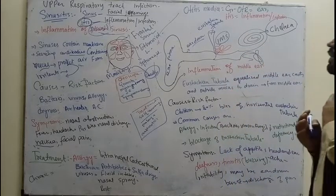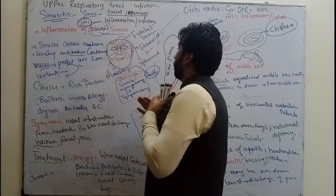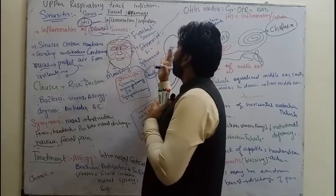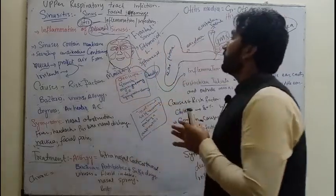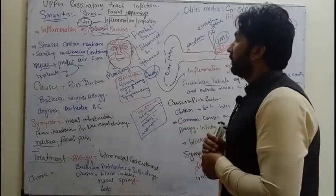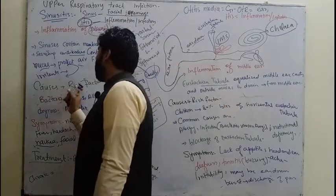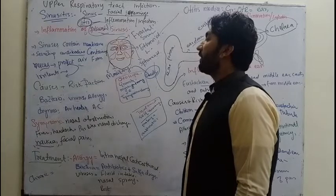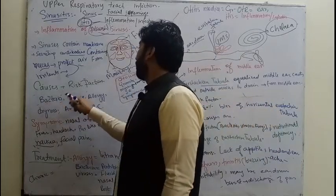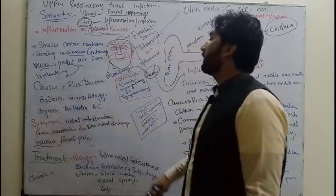So we have discussed four types of sinuses: frontal sinuses, ethmoid sinuses, sphenoid sinuses, and maxillary sinuses — maxillary being the largest facial opening. Now let's talk about the causes and risk factors. Sinusitis can be caused by bacteria, viruses, allergies, allergens, dryness, air heaters, and AC.